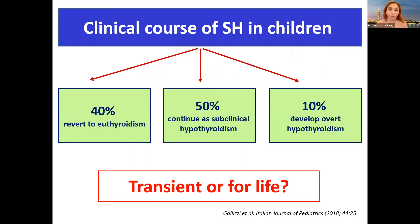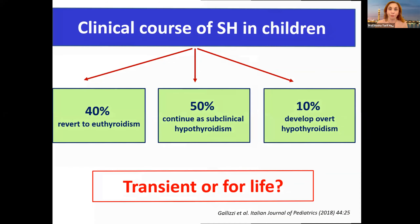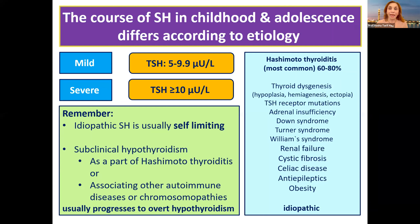About 50 percent of cases continue as subclinical hypothyroidism in children; 40 percent — which is a very good percentage — revert to euthyroidism; and only 10 percent could develop overt hypothyroidism. Looking more closely at the course, we have severe subclinical hypothyroidism when TSH is equal to or more than 10, and mild when TSH is from 5 to 9.9.